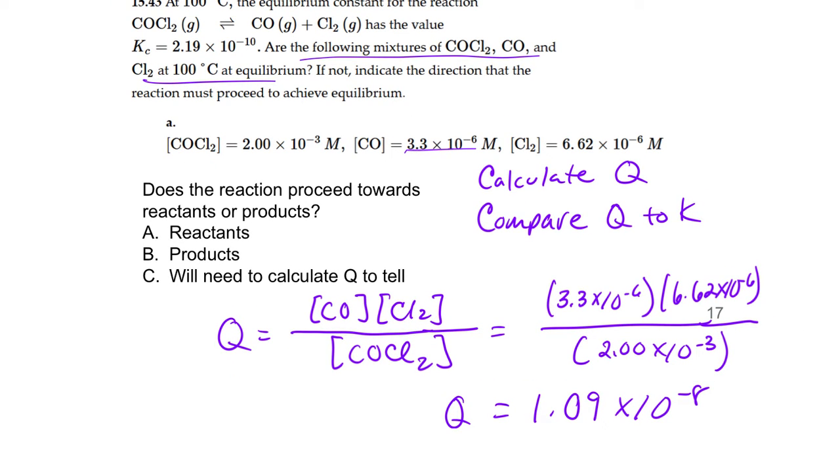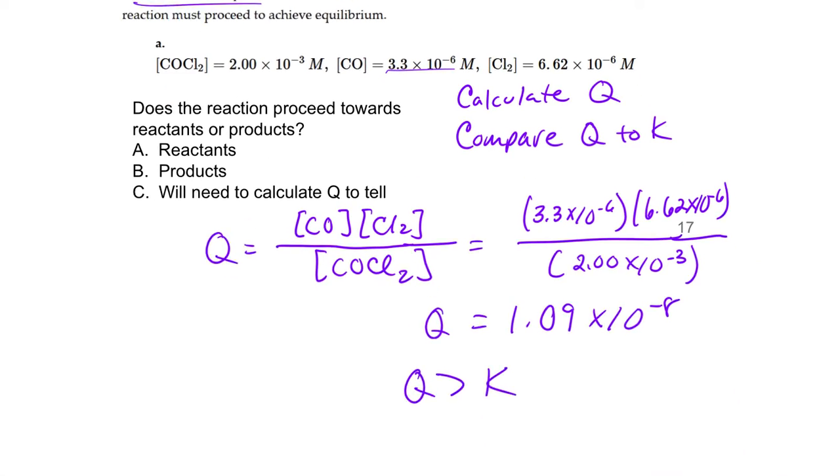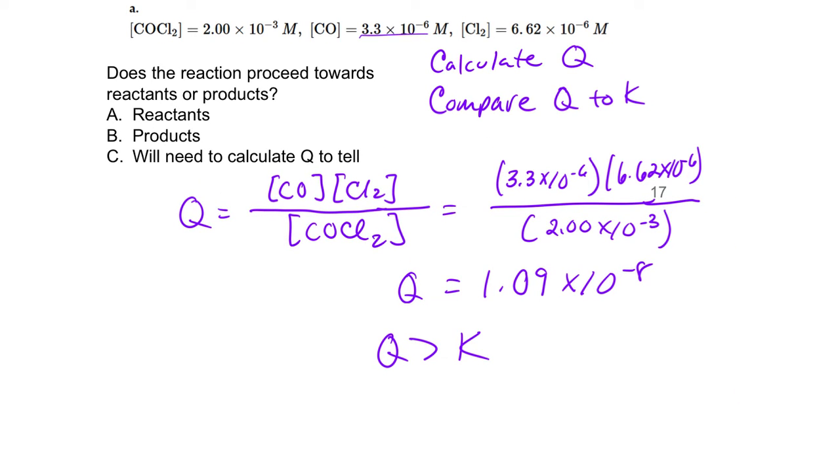And if we compare our value of Q to our value of K, Q is greater than K. And so, what has to happen to achieve equilibrium? Do we need to form more reactants or more products? That means the concentration of products is greater than the reactants. And so we need to form more reactants.